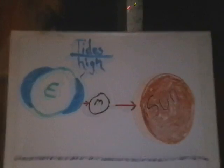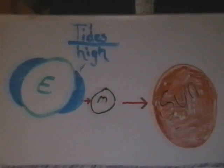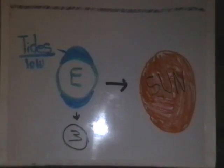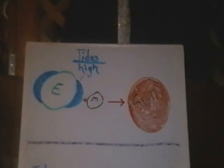Tides are periodic rises and falls of large bodies of water. Tides are caused by the gravitational interaction between the Earth and the Moon. The gravitational attraction of the Moon causes the oceans to bulge out in the direction of the Moon. Another bulge occurs on the opposite side, since the Earth is also being pulled towards the Moon and away from the water on the far side. Since the Earth is rotating while this is happening, two tides occur each day.